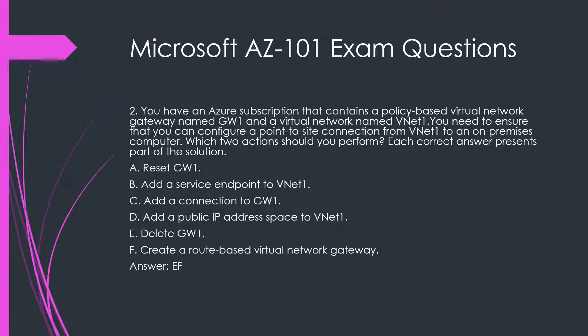Question 2. You have an Azure subscription that contains a policy-based virtual network gateway named GW1 and a virtual network named VNet1. You need to ensure that you can configure a point-to-site connection from VNet1 to an on-premises computer. Which two actions should you perform?